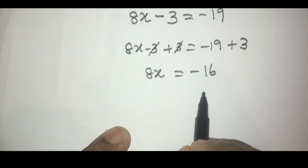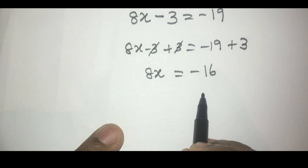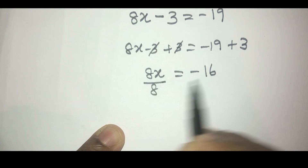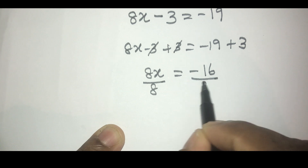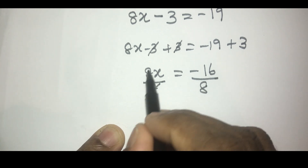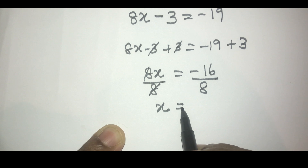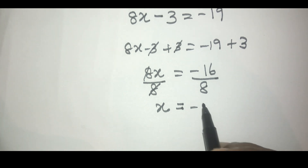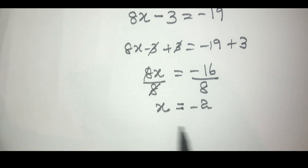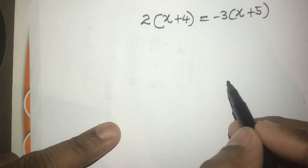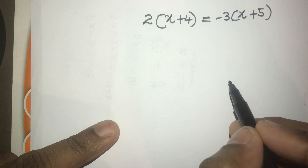So then we need to divide both sides by 8. So 8x equals minus 2, and the answer is minus 2.